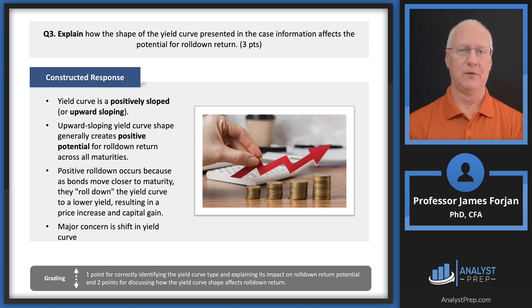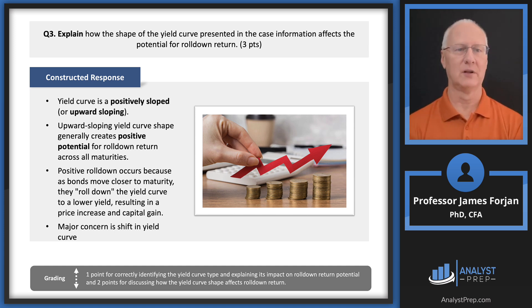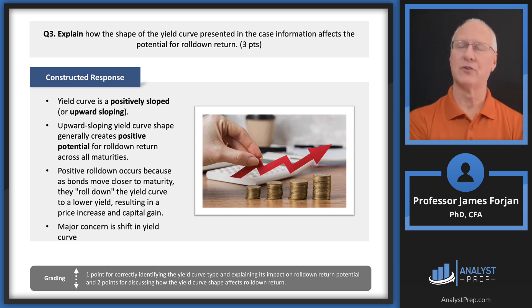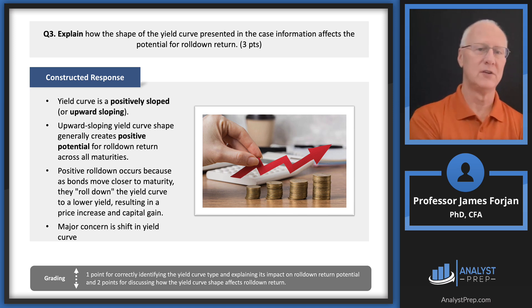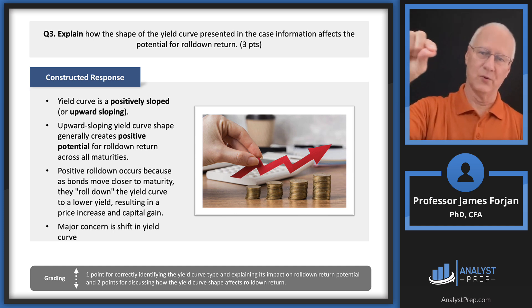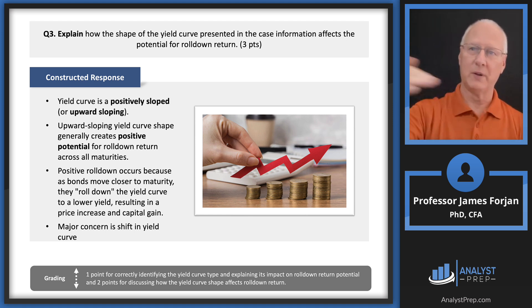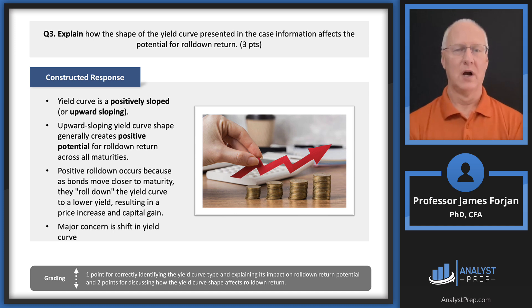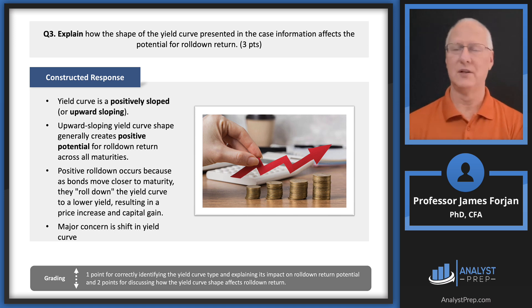My earlier example gave a hint about this yield curve section. The upward sloping yield curve creates positive potential for roll-down return. As I showed: you buy a bond at $1,002 or $1,003, and sell it for $1,028 or $1,030 — because we're rolling down the upward sloping curve back to a one-year maturity. You buy a four-year bond and sell after three years, or buy a 30-year bond and sell after 15 years. The major concern here is a shift in the yield curve.